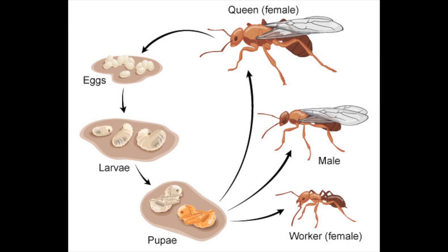Eggs. Ant eggs are oval-shaped and tiny. They are on the order of one millimeter long, but the queen's egg is many times larger.